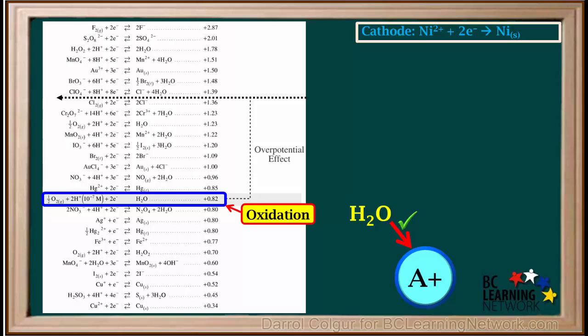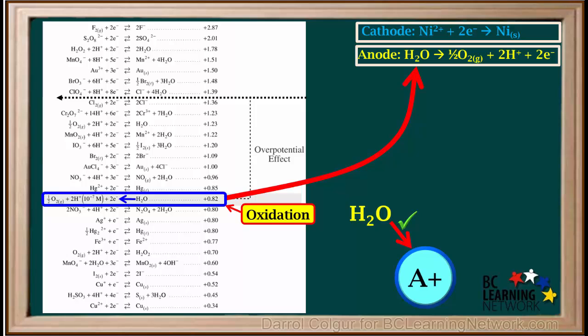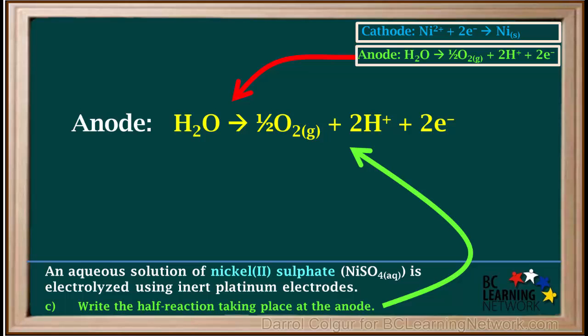Because oxidation occurs at the anode, the half reaction on the table has to be reversed. So the half reaction at the anode is H2O gives ½O2 + 2H+ + 2e-. So now we have the half reaction at the anode. And it's H2O gives ½O2 gas + 2H+ + 2 electrons.